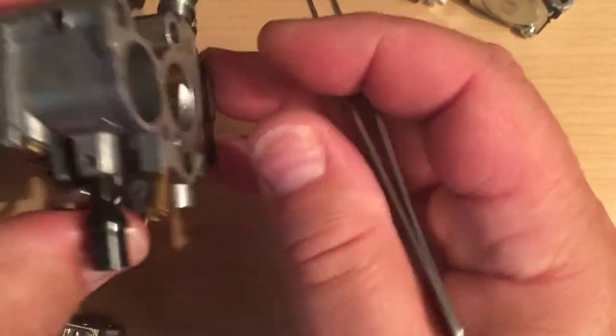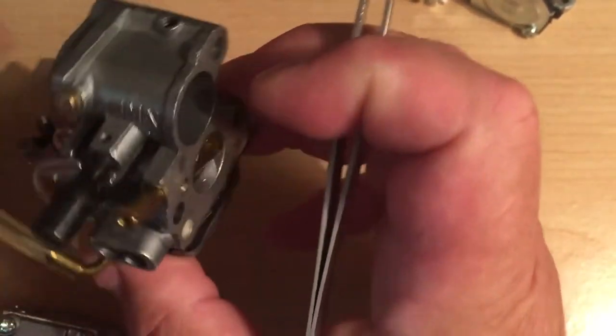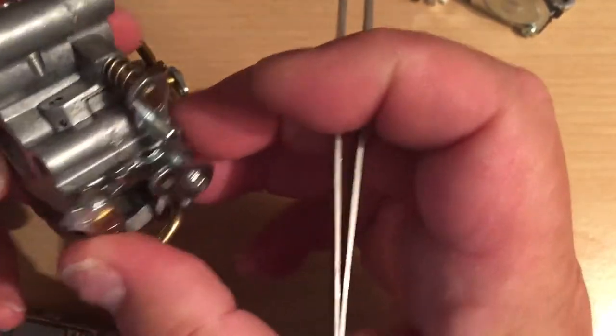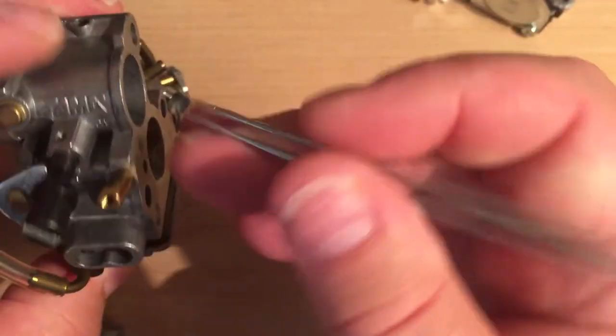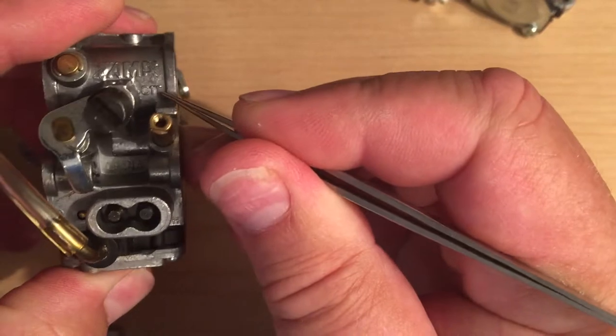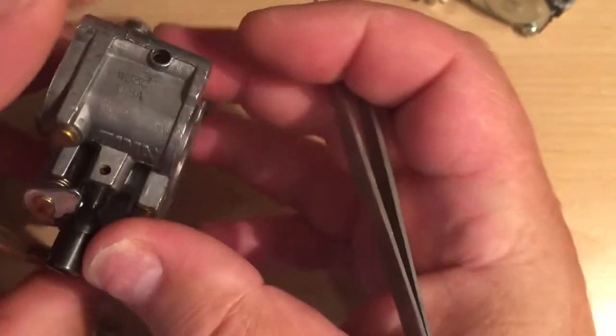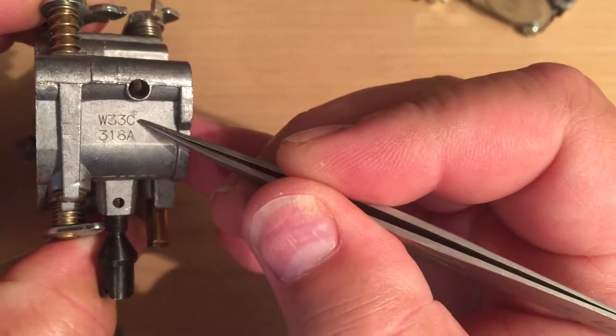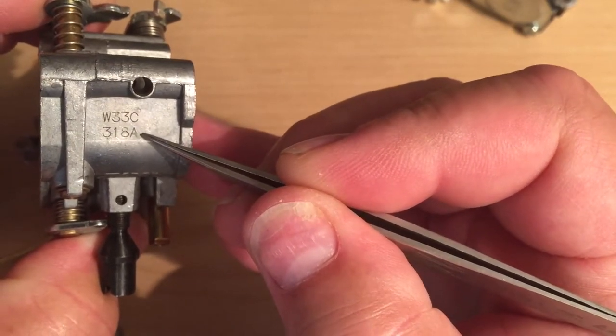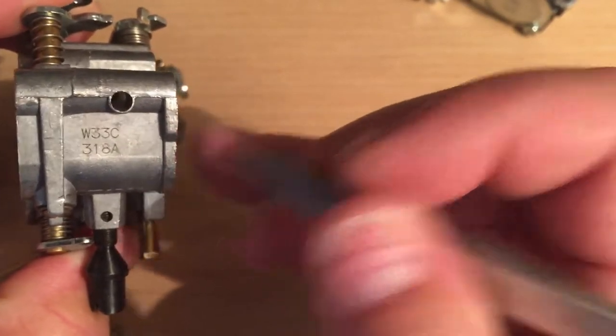On some carburetors like this C1T, the C1T is right here, and then the model number itself is right here, the W33C. Below it, date code. That's irrelevant. You don't need to know that number, you just need to know the W33C.